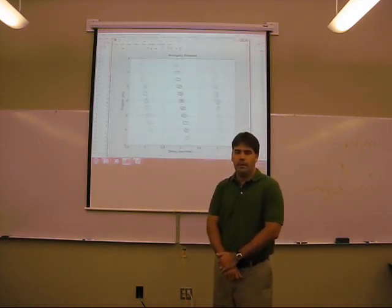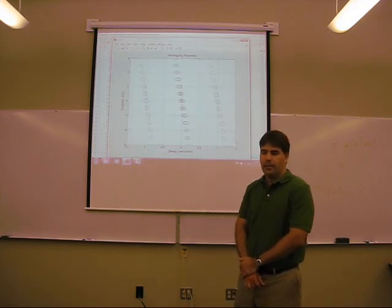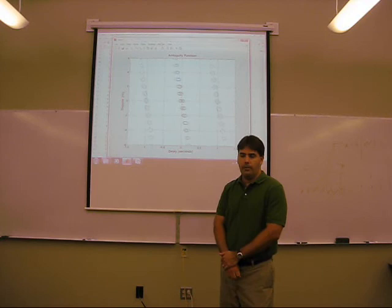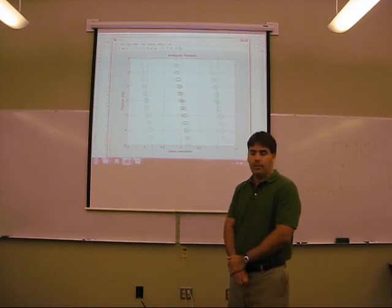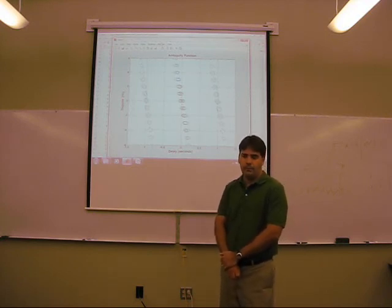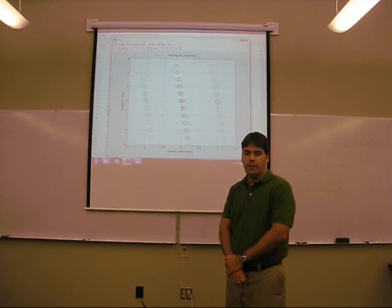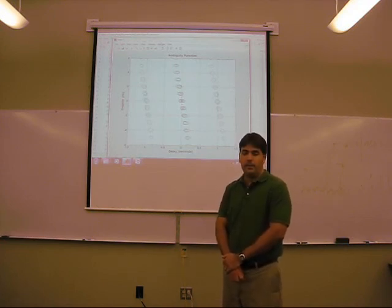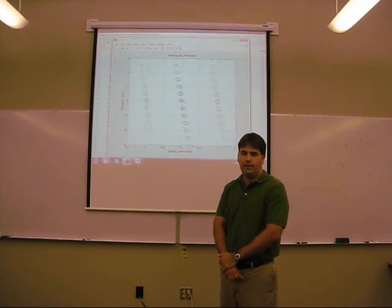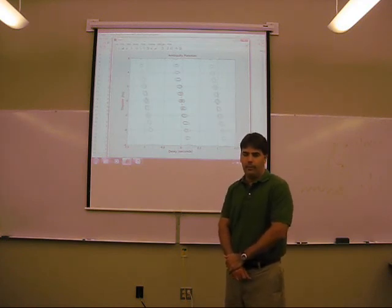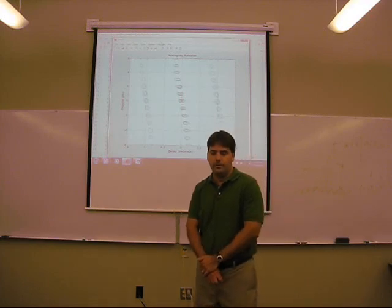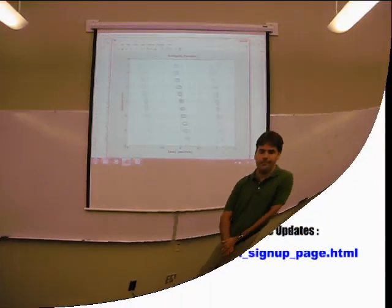When we execute this code, a contour plot of the ambiguity function is shown. This plot gives an indication of both the range and Doppler resolutions of this waveform, as well as the range and Doppler ambiguities of this waveform. Each location where we see a peak in this plot is an ambiguity for this waveform. These ambiguities can be overcome with PRF staggering, which we will cover in later sections. Thank you.